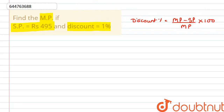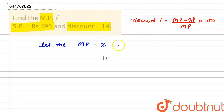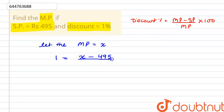Now, let us assume that the mark price is x. So, substituting the values: 1 is equal to x minus 495, divided by x, into 100.